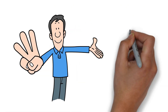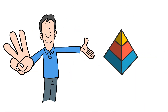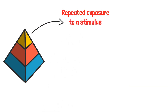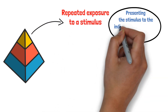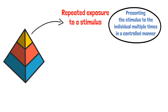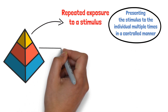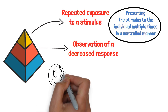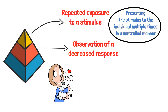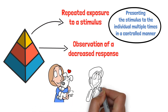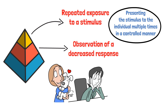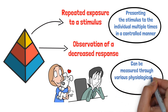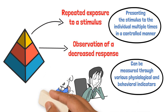There are three main steps involved in habituation. The first step is the repeated exposure to a stimulus, which involves presenting the stimulus to the individual multiple times in a controlled manner. The second step is the observation of a decreased response. As the individual is repeatedly exposed to the stimulus, their response to it gradually diminishes. This decrease in response can be measured through various physiological and behavioral indicators.